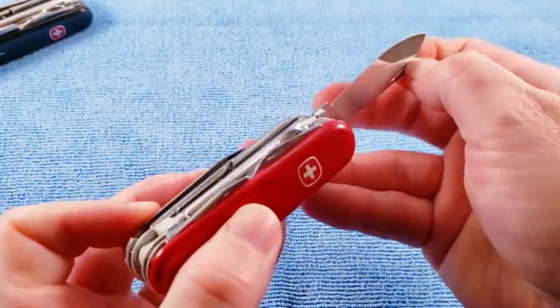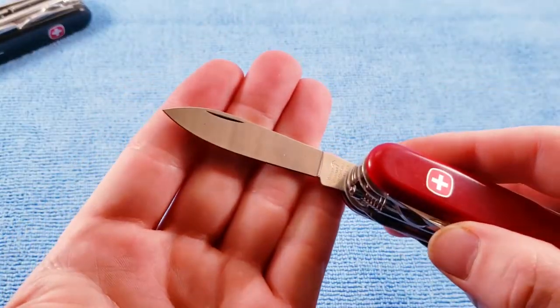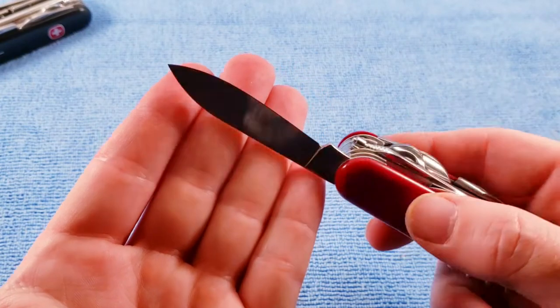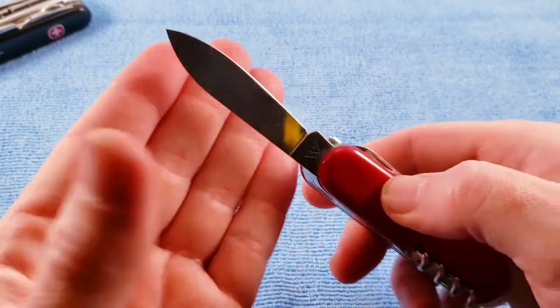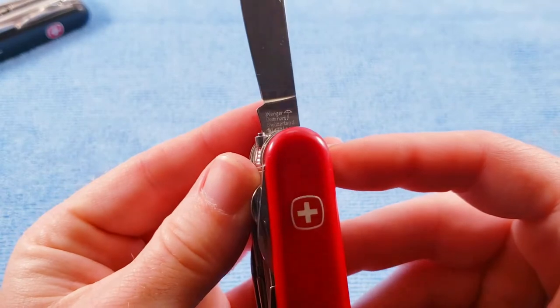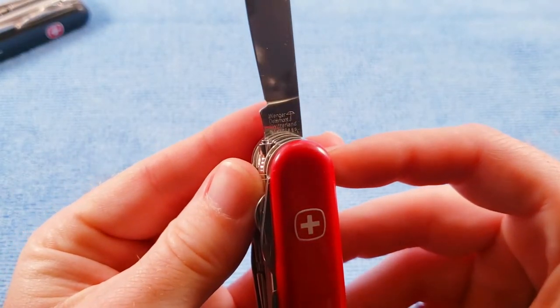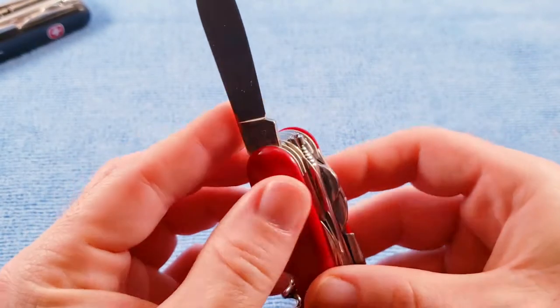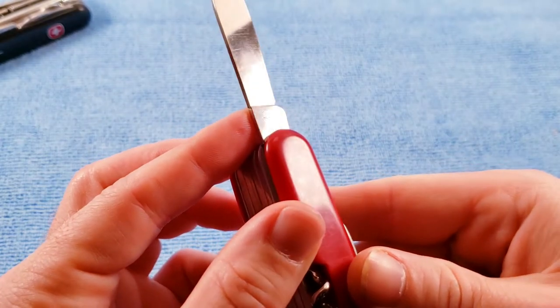We get the standard main blade, and for tang stamp we get Wenger Delamont Switzerland Stainless with the bow and arrow and the Wenger tang stamp on the rear.